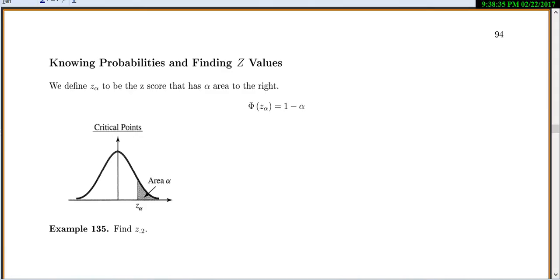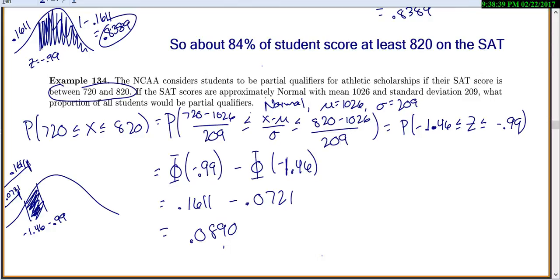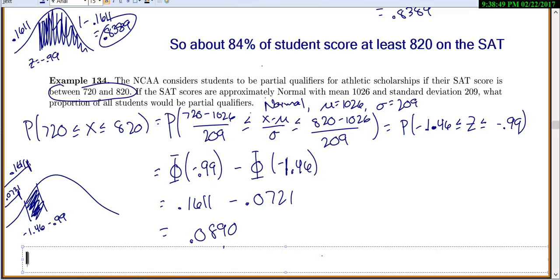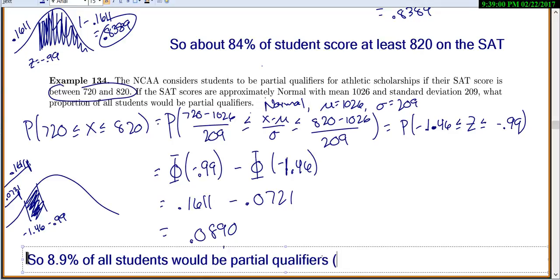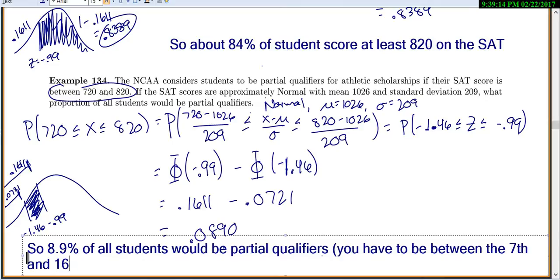Those two values correspond to between the 7th and 16th percentiles. So 8.9% of all students would be partial qualifiers. The 7th percentile comes from 0.07 to the left, and the 16th percentile from 0.16 to the left. So partial qualifiers aren't very high on these actual scores.